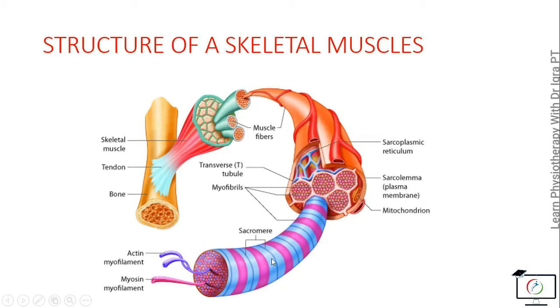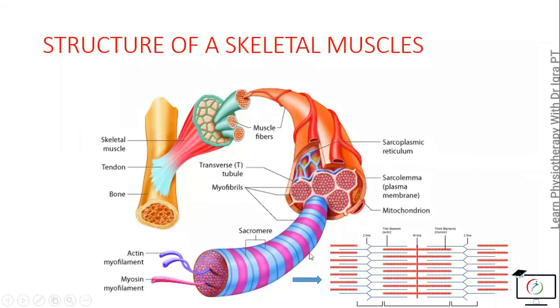Each myofibril has a sarcomere with Z lines, an A band, an I band, and the actin and myosin filaments.